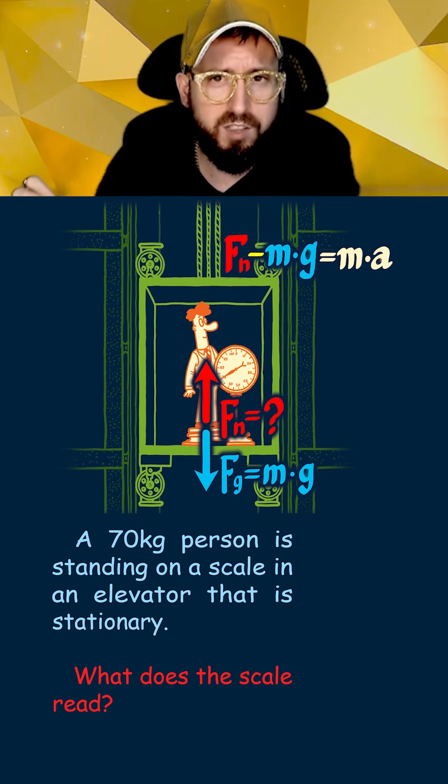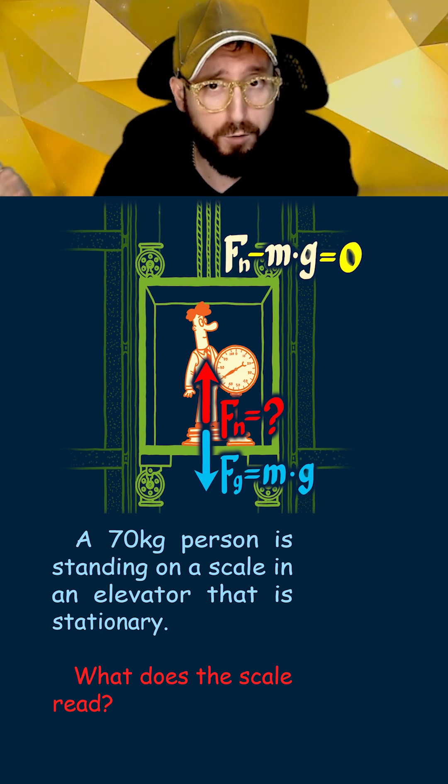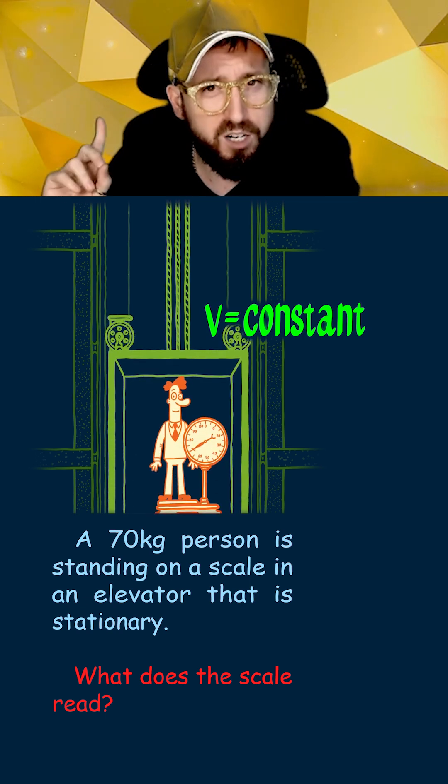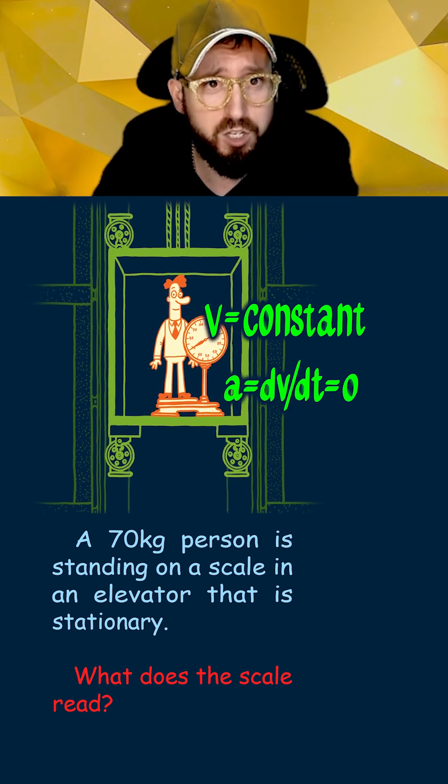Now since the elevator is at rest, this means that the acceleration is zero. And therefore, the normal force is equal to the force of gravity, which is 686 newtons. Note, this would still be the case if the elevator were moving at a constant velocity, because then the acceleration would still be zero.